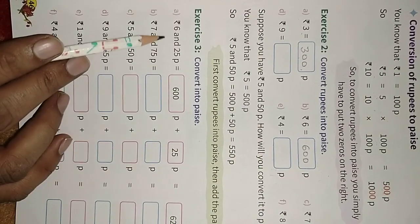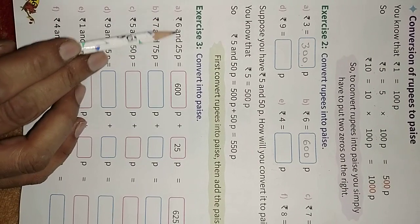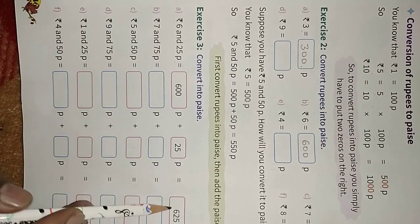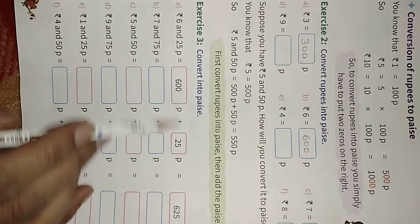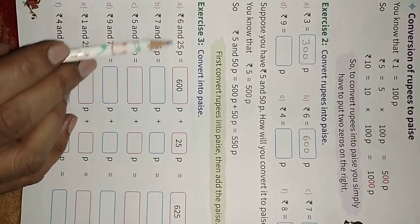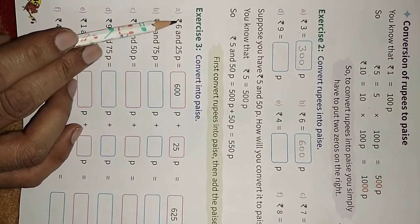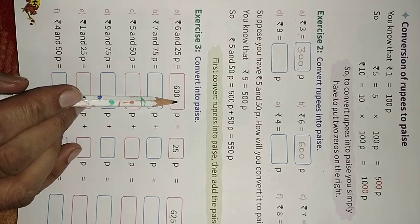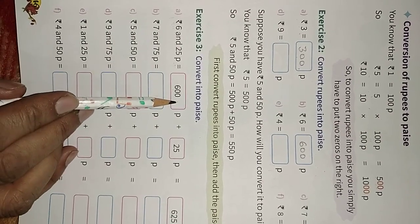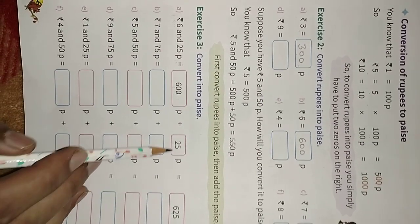Exercise 3: convert into paisa. Now we have to convert these rupees and paisa into paisa. For example, 6 rupees and 25 paisa — the first question is already done. 6 rupees equals 600 paisa and 25 paisa stays as it is. So to convert two units into the same unit, 600 plus 25 is equal to 625 paisa.